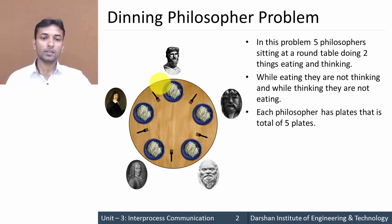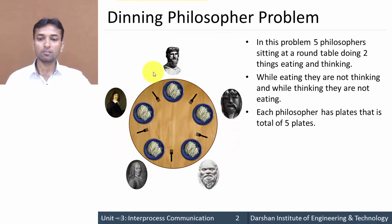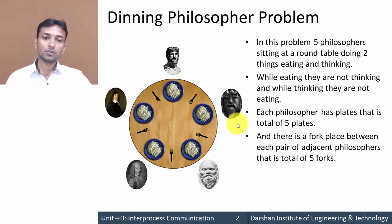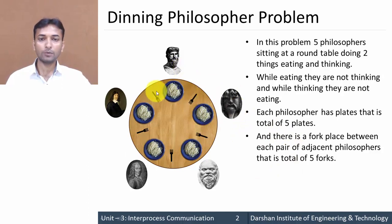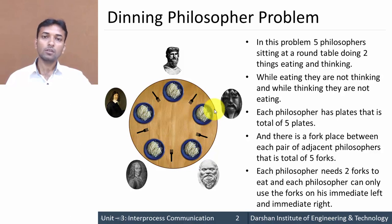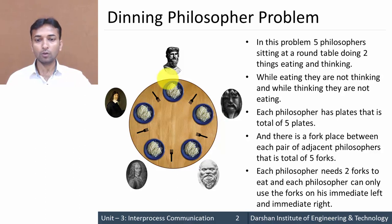Each philosopher has its own plate, so the number of plates equals the number of philosophers. There are five philosophers so the number of plates is five. There is a fork between each pair of adjacent philosophers, so the total number of forks is five. Each philosopher requires two forks to eat, and each philosopher can access the fork immediately to the left as well as immediately to the right. A philosopher cannot access any other fork.